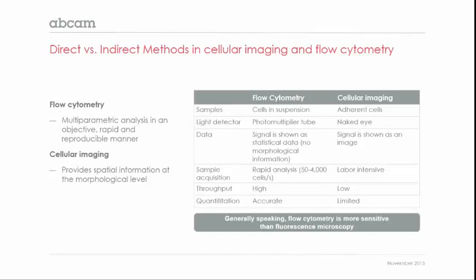Flow cytometry is a multi-parametric analysis in an objective, rapid, and reproducible manner, while cellular imaging provides spatial information at morphological and tissue levels. Notably, flow cytometry is generally more sensitive than fluorescence microscopy, which is an important factor when deciding between a primary antibody conjugate and a secondary antibody conjugate.